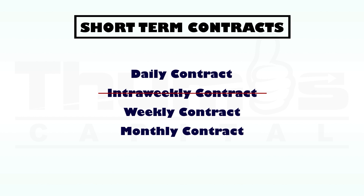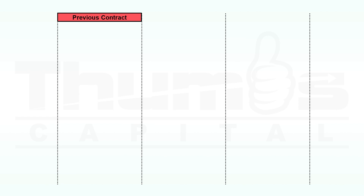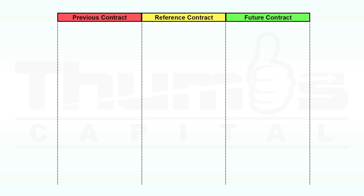At the end of every daily contract, we share institutional orders from that day on the Thumb's institutional data channel. With this data, it becomes easy for us to know what institutional accumulation is within an intraweek contract, hence we know what their bias is for the following intraweek contract. In the analysis of institutional accumulation, three intraweek contracts are involved: one, the previous intraweek contract; two, the current or reference intraweek contract; three, the future intraweek contract.